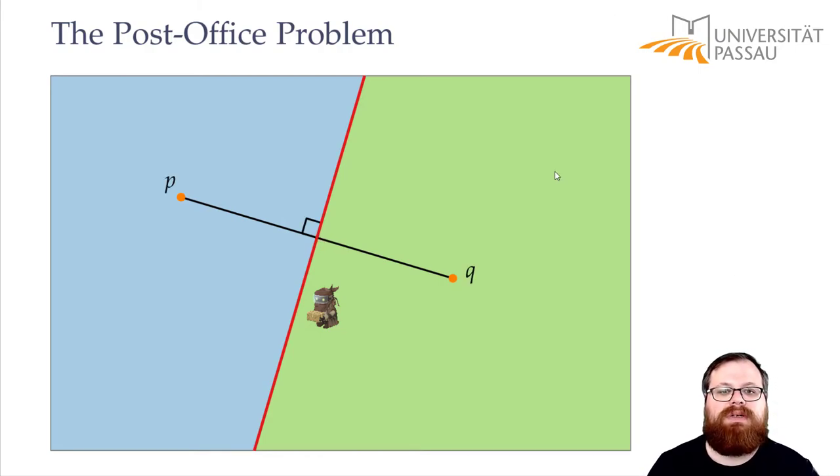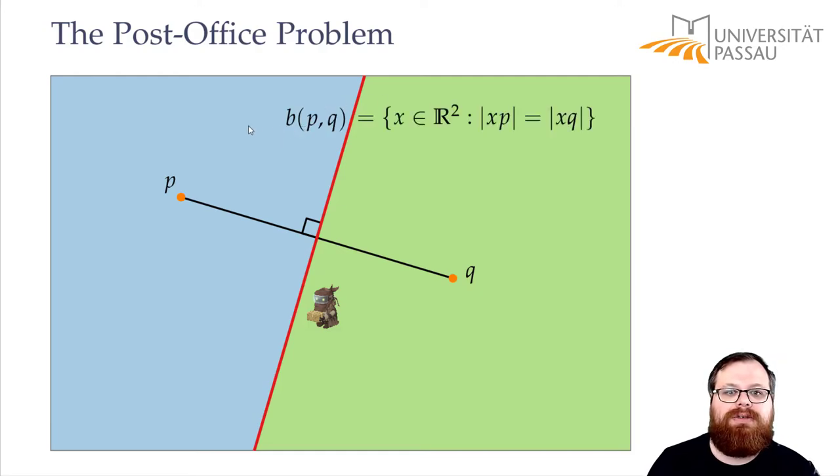So if we have two points P and Q then we can define the bisection of P and Q as the set of all points in the plane where the distance to P is the same as the distance to Q. So this is exactly the border between the region of these two points. If you are on this red line then it doesn't matter if we go to P or Q we have the same distance. If you are in the green then we want to go to Q. If you are in the blue we want to go to P.